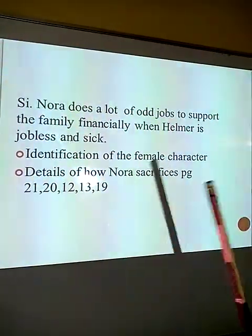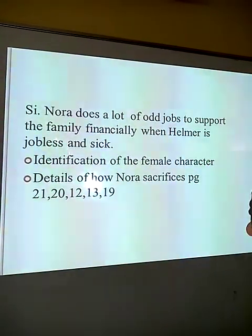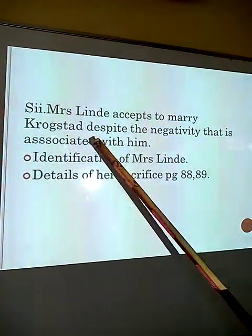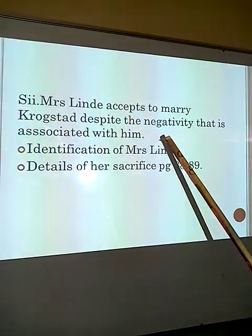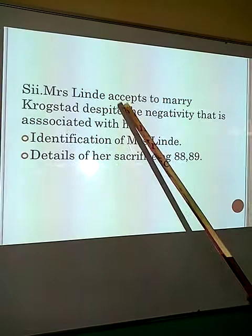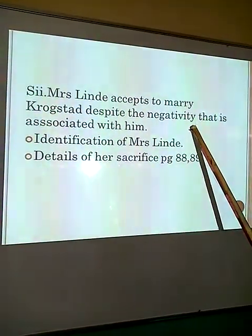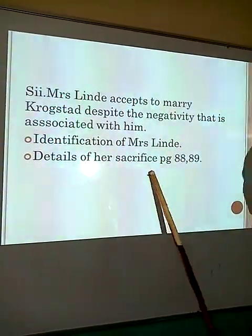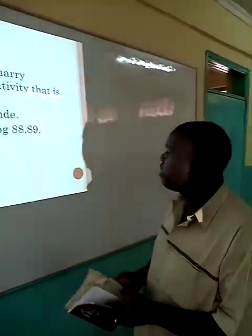Number two: 'Mrs. Linde accepts to marry Krogstad despite the negativity associated with him.' We have identified Mrs. Linde as the female character who sacrifices, and how she sacrifices is already brought out. We want to see the details of this sacrifice. Let us look at pages 88 and 89 and see how to earn fair and full marks.